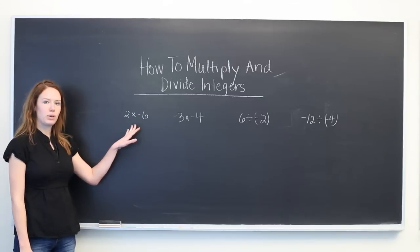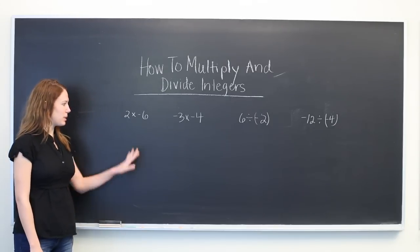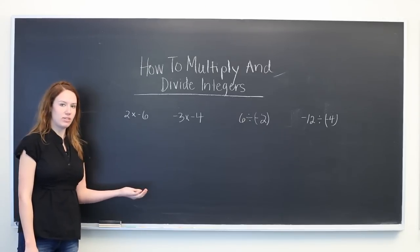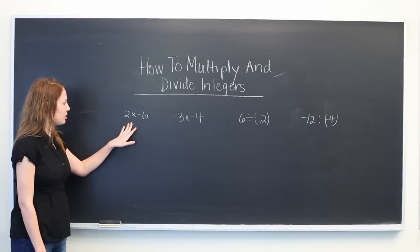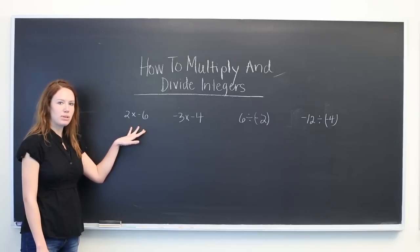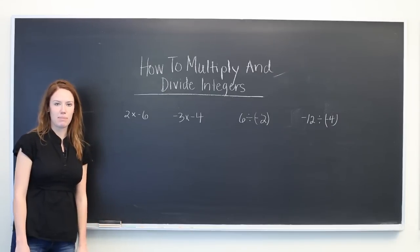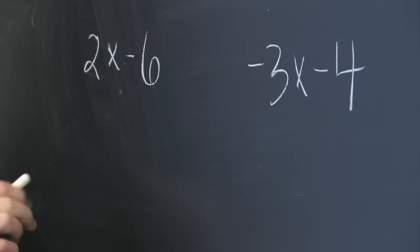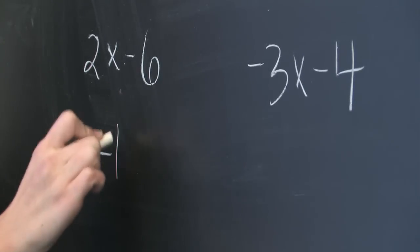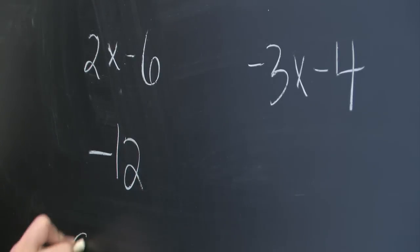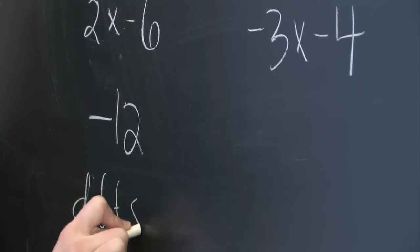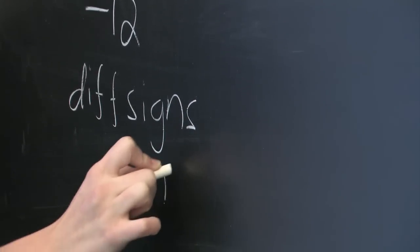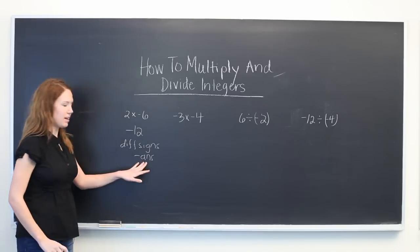The first example, 2 multiplied by minus 6, will show us how to multiply two integers where one sign is negative and the other sign is positive, so they have different signs. When this is the case, you can multiply the two numbers as if they were both positive and just put a minus sign in the product or the answer. So since they're different, we know the answer will be minus, and then 2 times 6 will be 12. So different signs give us a negative answer.